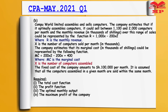The company estimates that if it optimally assembles computers, it could sell between 1,100 and 2,000 computers per month, and monthly revenue — in thousands of shillings — over this range of sales could be represented by the function R equals 1,000x minus 2,200x squared, where R is the monthly revenue and x is the number of computers sold per month, in thousands.